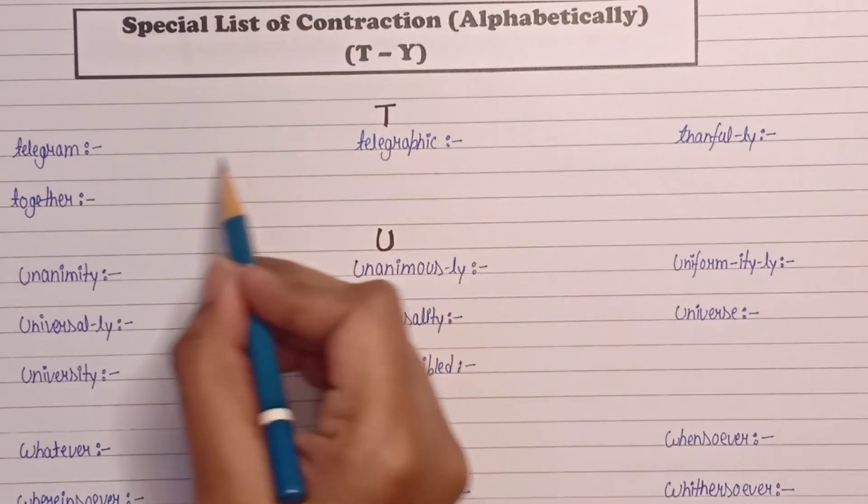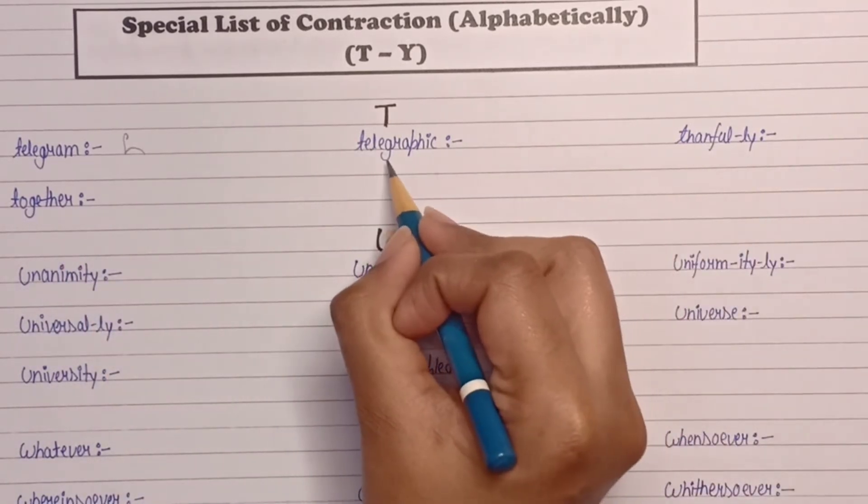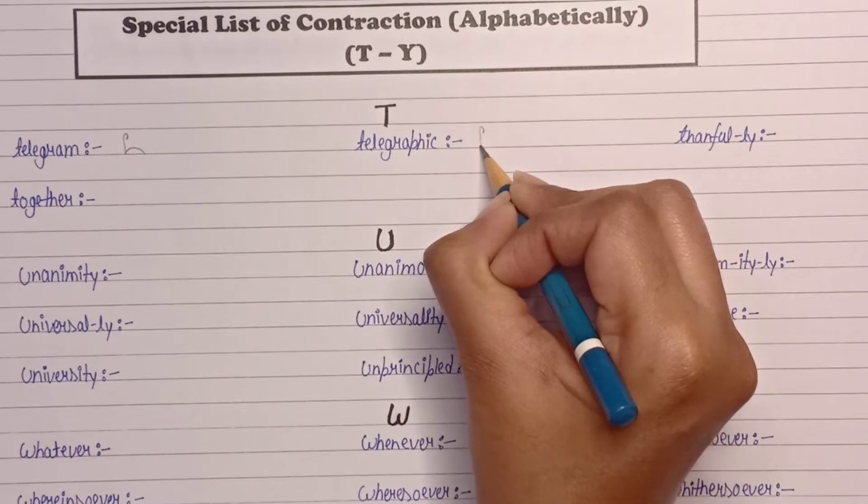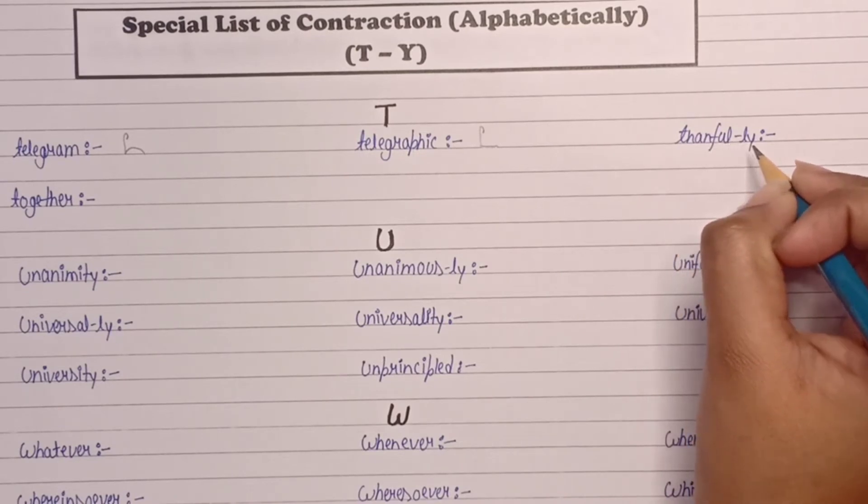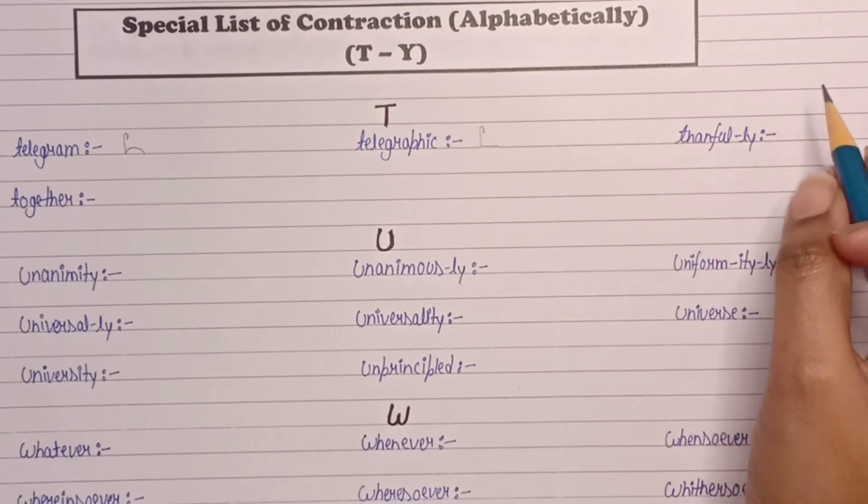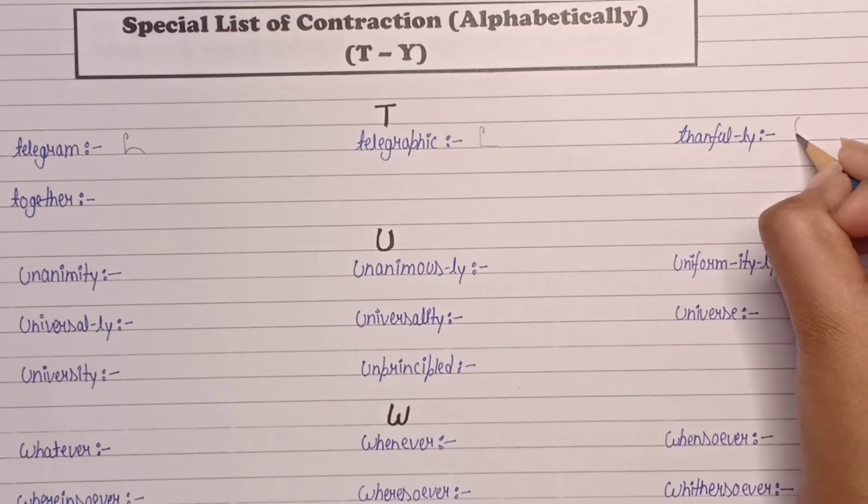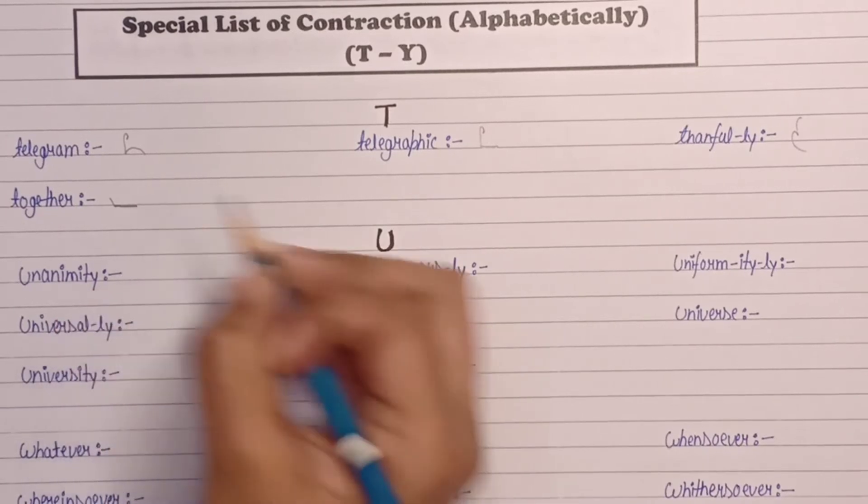First alphabet is T. The word is telegram: T-L-M. Telegraphic: T-L and graphic G. Thankful or thankfully - two words coming, one is thankful and another is thankfully, but we use a single outline for both words. The outline is TH for thank and F-L for full together, T and G together.